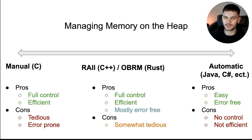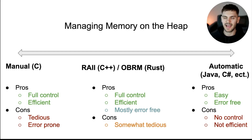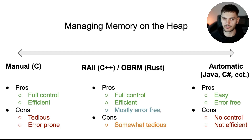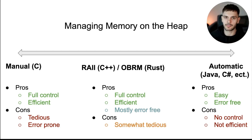You might notice that the two sides of the spectrum have opposite trade-offs. The middle approach gives you all the pros of manual memory management — control over your memory and efficient programs — with the added benefit of memory safety. It's mostly error-free, though not quite as error-free as a garbage collected language. The one con is that it's still somewhat tedious: not as tedious as manual memory management, but certainly not as easy as automatic memory management where you don't have to think about memory at all.